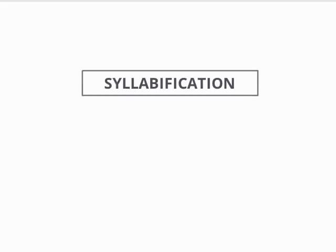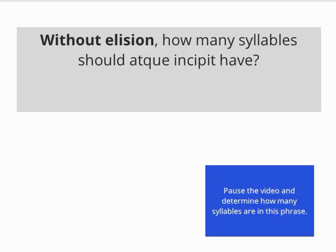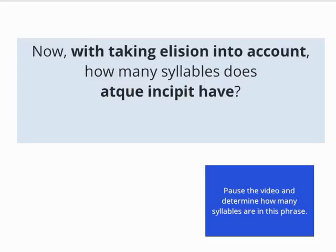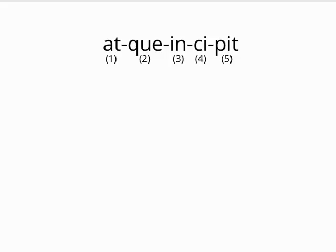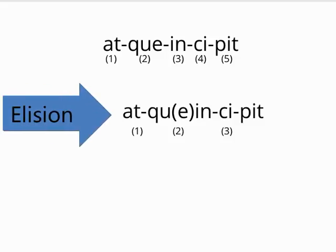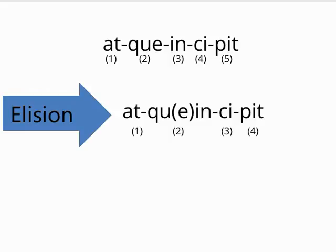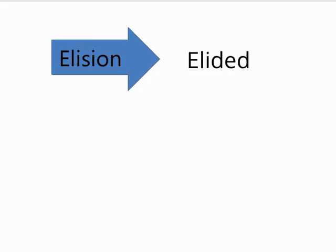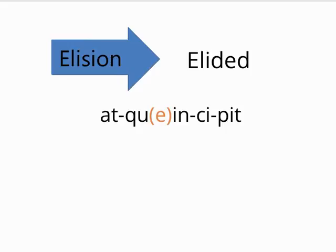Elision not only changes pronunciation, it also has a substantial impact on syllabification. With the elision, the number of syllables is actually four because the e is suppressed — atquincipit. Note that when a vowel is omitted through elision, we say that it has been elided. An elided vowel does not count for metrical purposes. In atquincipit, the length of the final e in atque is irrelevant; only the initial I in incipit matters for metrical purposes.